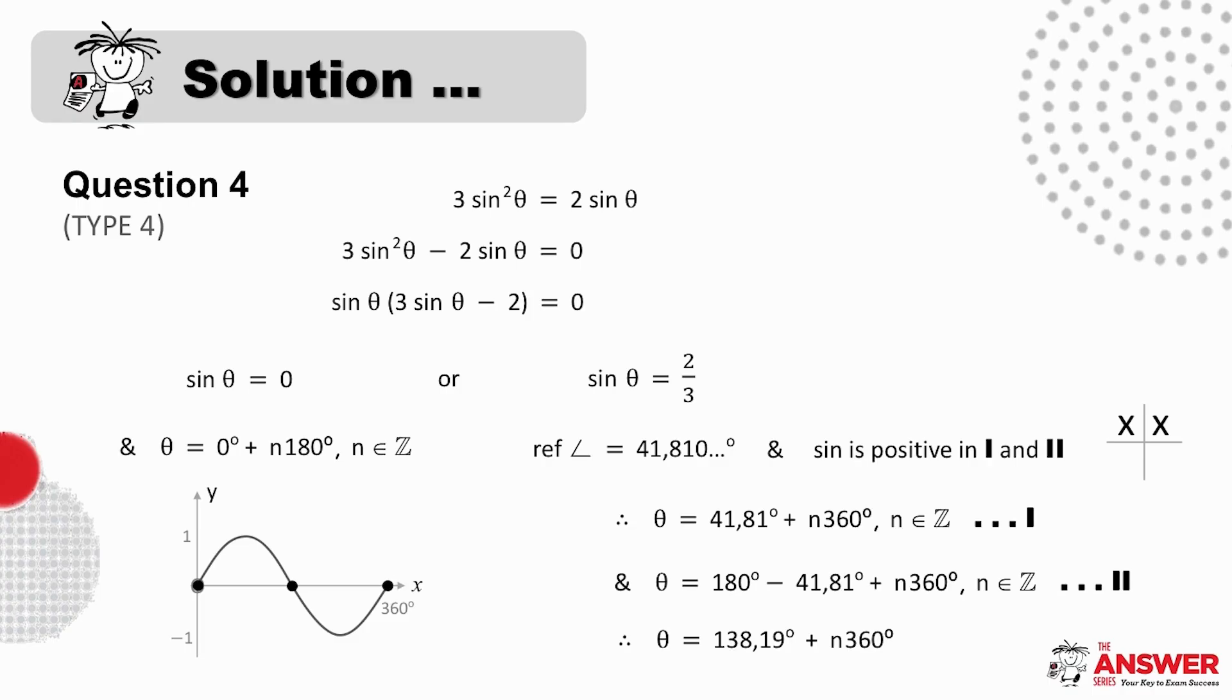Question 4 is a type 4 equation, a mix of ratios. Here we take everything to the left first and factorize in order to solve. Once we have the product of two factors equaling zero, we know that either the one or the other has to be zero. Sine theta is zero at 0 degrees and then every 180 degrees in both directions. And for sine theta equaling two-thirds, this is a type 1 equation. And so we find the reference angle and identify which quad sign is positive, and then find the equations in each case. Because they asked for the general solution, these are our final answers.